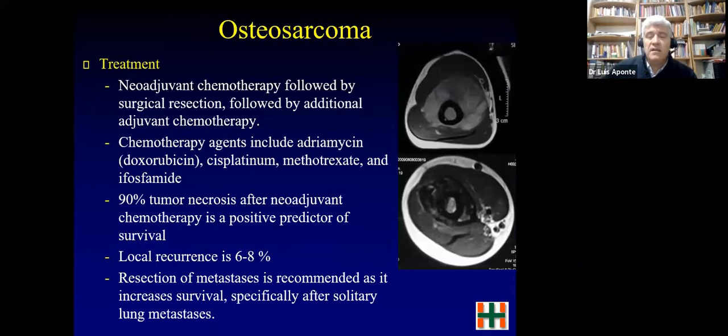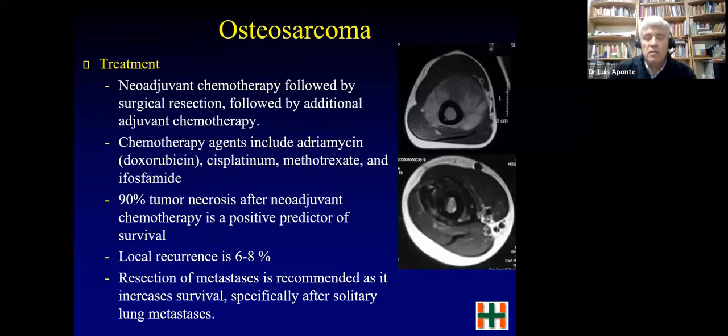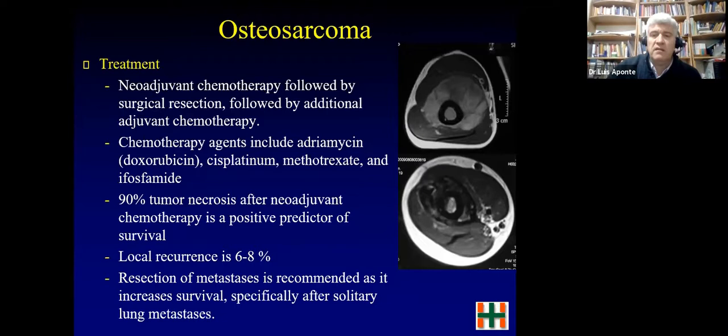Local recurrence is between six and eight percent. If there is metastasis, it is recommended to resect it because this increases survival, particularly when there is only one metastasis. Here is a picture pre-chemotherapy showing the large mass, then post-chemotherapy showing how it shrank, and how it looks before surgery. Chemotherapy is very important in this setting.